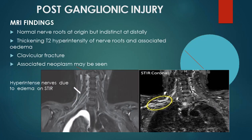Coming to the postganglionic injury — this is the injury beyond the dorsal nerve root ganglion. On MRI, the nerve roots will be normal at origin but indistinct distally. The terminal nerves will appear T2 hyperintense with thickening and edema. As indirect evidence, we can see clavicular fracture, and sometimes there could be a neoplastic etiology like Pancoast tumor, which generally causes postganglionic brachial plexopathy. The T2-star coronal section shows hyperintensity and edema in the terminal nerves — this is a postganglionic type of injury.